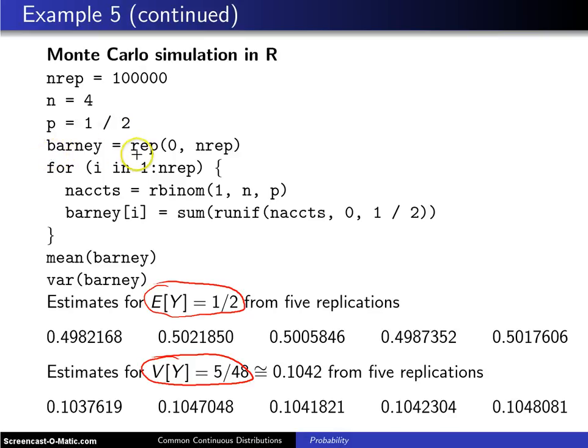So, we take Barney and have a vector set up that contains all zeros. The length of the vector is 100,000, and we put a zero into each element of that vector.